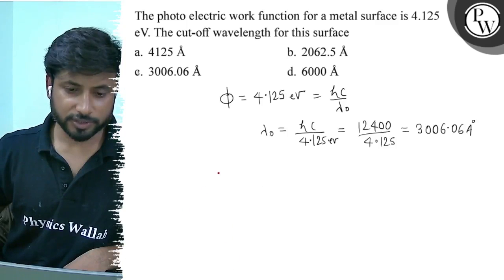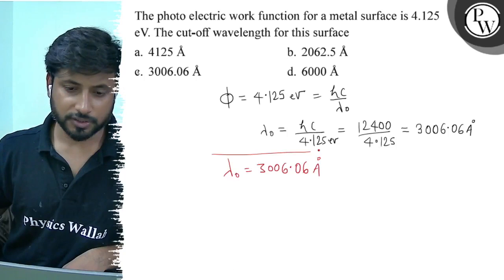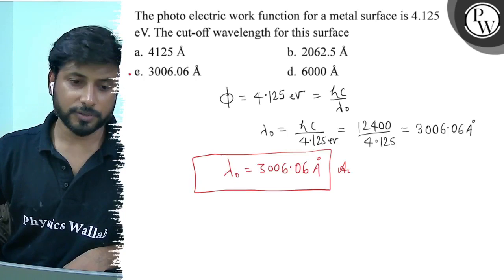So here we have the threshold wavelength, lambda naught equals 3006.06 angstroms. This is the correct answer. So the final answer is option C.